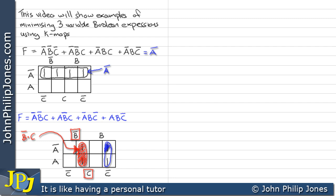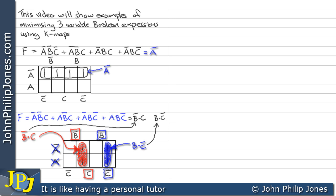If we look at the other loop we can see that it is clearly in B and not C. We don't need to shade to realise it's not anything to do with A. So this loop is B and not C. We can now minimize this to: not B and C, together with B and not C, and then OR them together.